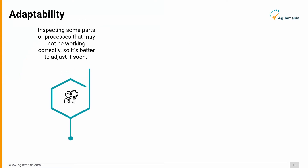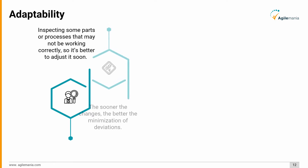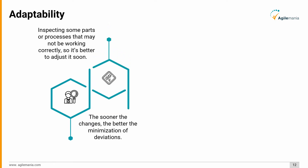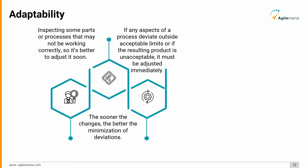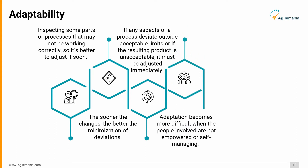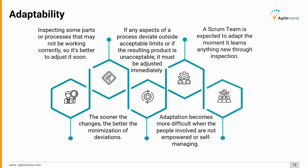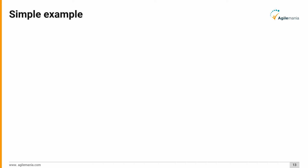Lastly, adaptability: inspecting parts or processes that may not be working correctly means it's better to adjust soon — the sooner the changes, the better the minimization of deviations. If any aspects of a process deviate outside acceptable limits, or if the resulting product is unacceptable, it must be adjusted immediately. Adaptation becomes more difficult when the people involved are not empowered or self-managing. A Scrum team is expected to adapt the moment it learns anything new through inspection.